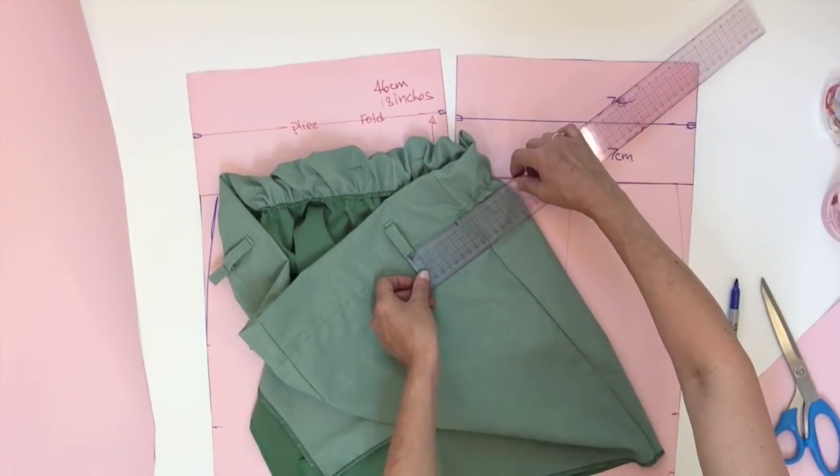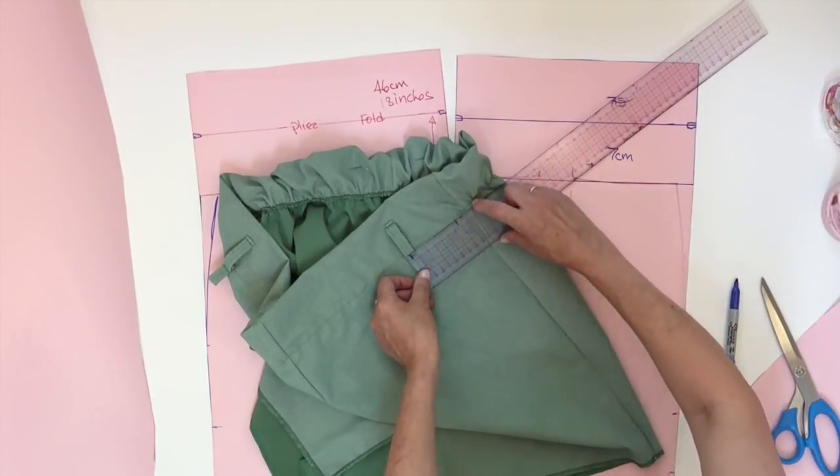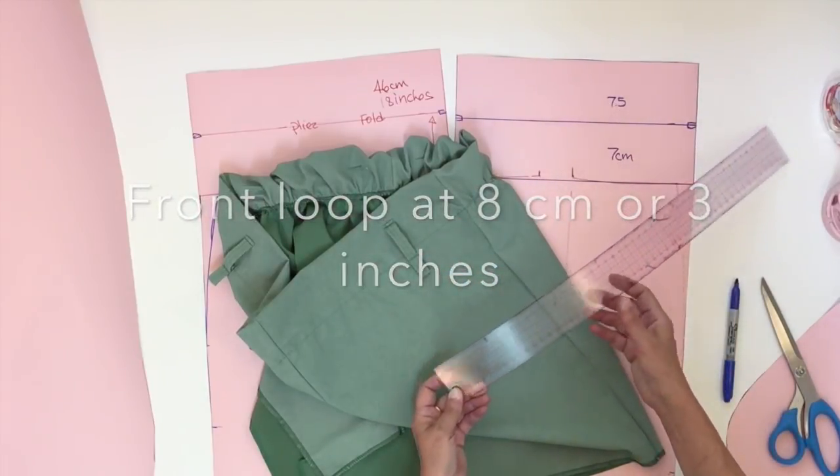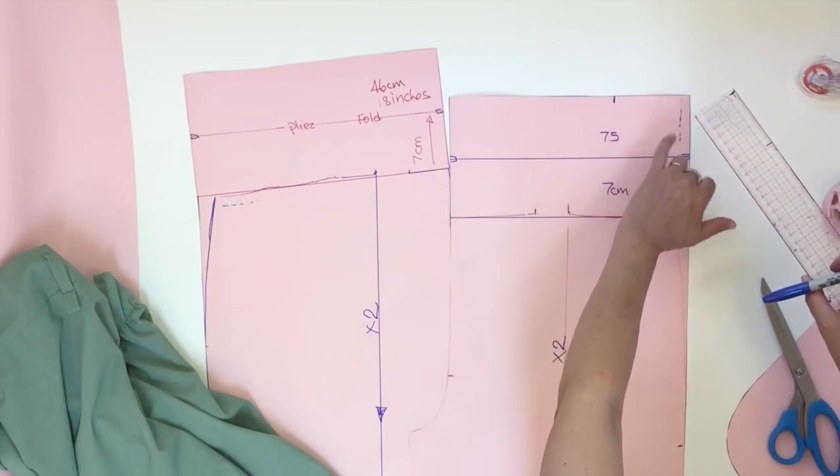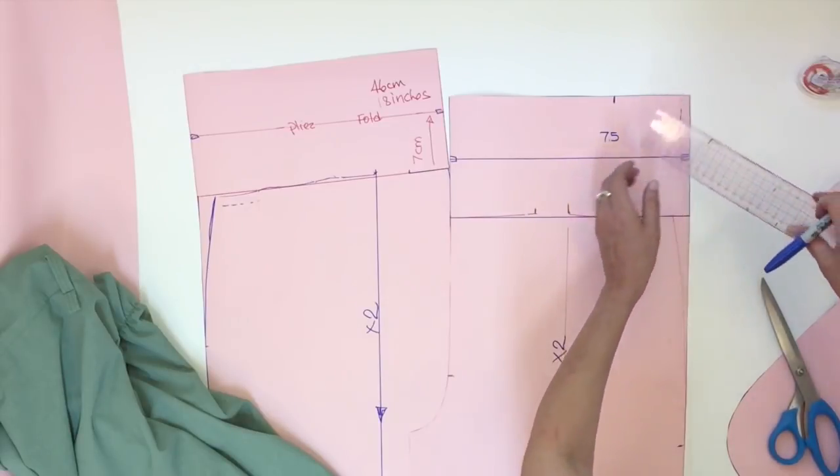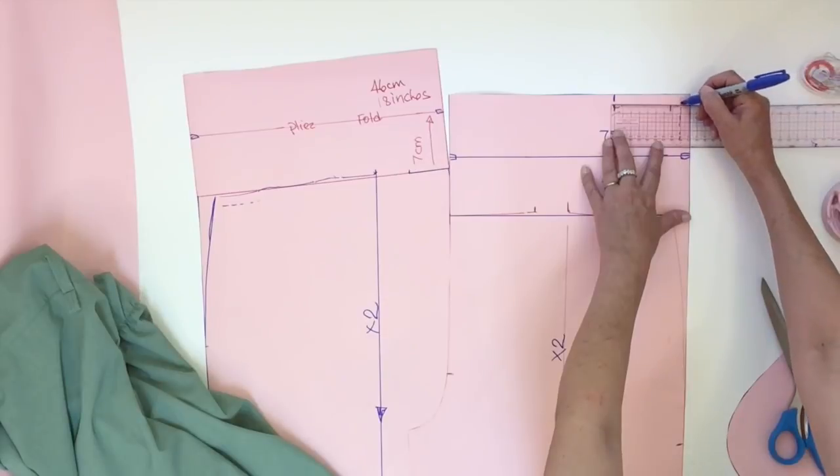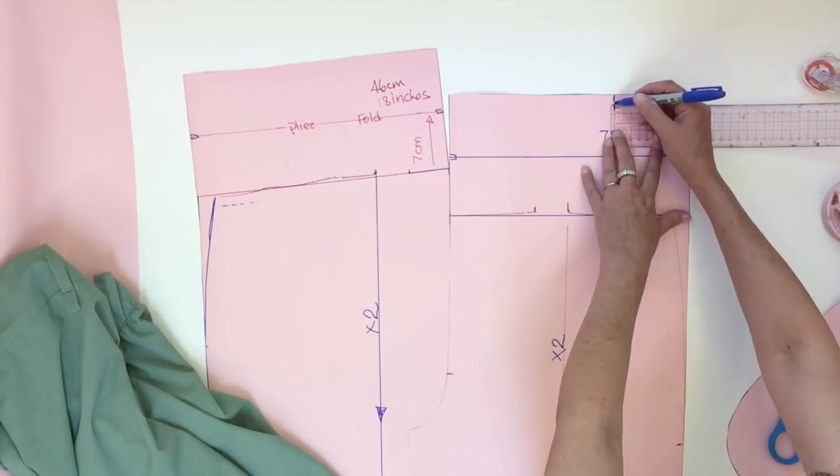So in the front, the center of my loop is at eight centimeters from the side seam. Now to place the notch for the loop, remember that you have your seam allowance included. So if you want eight centimeters finished, measure from the seam line eight centimeters.